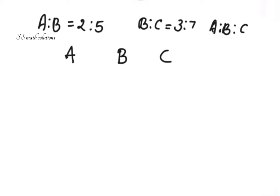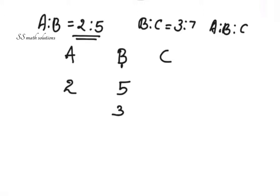Now a is to b — we know that is 2 is to 5 — so we are arranging like this: a is to b, that is 2 is to 5. Now b is to c is 3 is to 7, so b is here and c is here, so we write 3 is to 7.